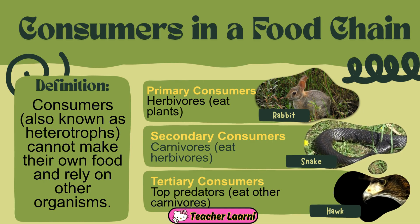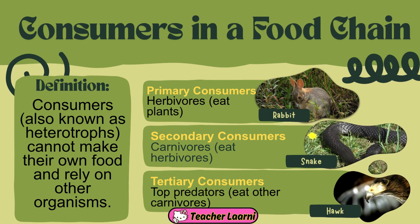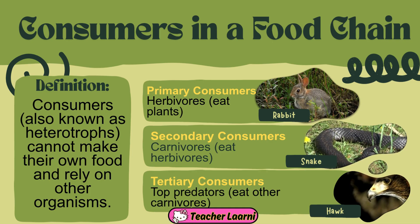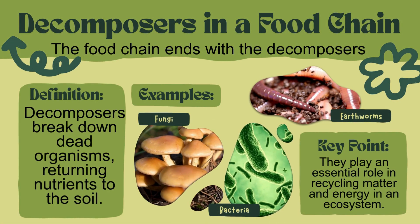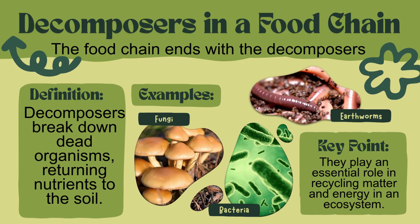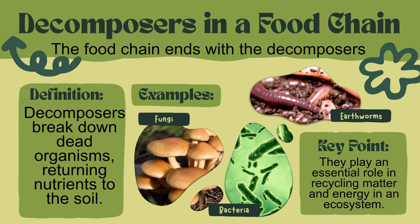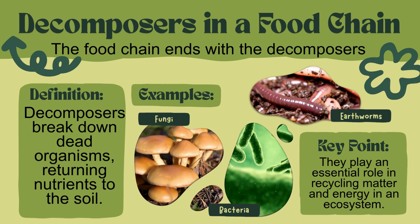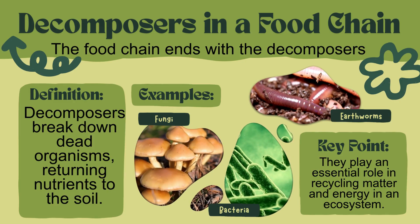Tertiary consumers may further consume secondary consumers. They are the top predators. The food chain ends with the decomposers, such as bacteria, fungi, and earthworms. Decomposers break down dead organisms, returning nutrients to the soil. They also play an essential role in recycling matter and energy in an ecosystem.